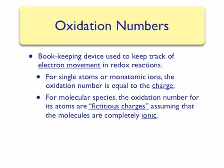For single atoms or monatomic ions, the oxidation number is simply equal to the charge — very similar to assigning ionic charges in ionic compounds. However, for molecular compounds, no atom has a net charge. So for molecular species, we pretend that we break the molecule up into complete ions. Using our oxidation number rules, we assign those atoms fictitious charges. In this way, we can see which element changed charge or oxidation number to determine whether it has been reduced or oxidized.